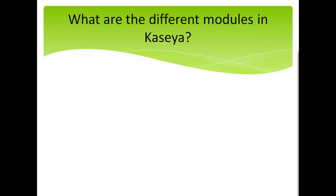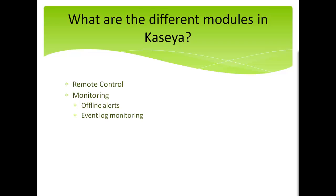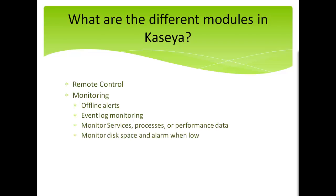Kaseya has quite a few modules available, but some of them may not be turned on for you or may not even be in use by your company. The core modules of Kaseya are Remote Control, allowing you to help your clients remotely by seeing their screen. Monitoring is a big part of Kaseya — we can set Kaseya to do things like Monitor Offline Alerts, letting you know when a server's down; Event Log Monitoring, which looks for things in the Windows Event Logs and alerts you; monitoring services or applications; or monitoring things like CPU utilization or low memory. We can also monitor disk space and alarm when the space gets below a certain threshold.